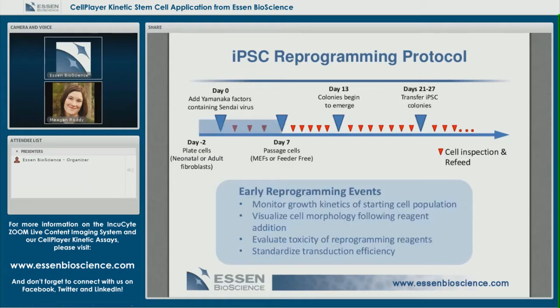Visualizing the reprogramming experiment in its entirety allows the user to get much more information from the process. During early reprogramming events, we monitored the growth kinetics of the starting fibroblast population. To standardize the reprogramming protocol, we utilized the confluence metric to assess that cells were at consistent levels of confluence prior to CytoTune addition. We also closely observed cell morphology after reagent addition, and users can monitor transduction efficiencies and general cell health and any possible contamination throughout the process.